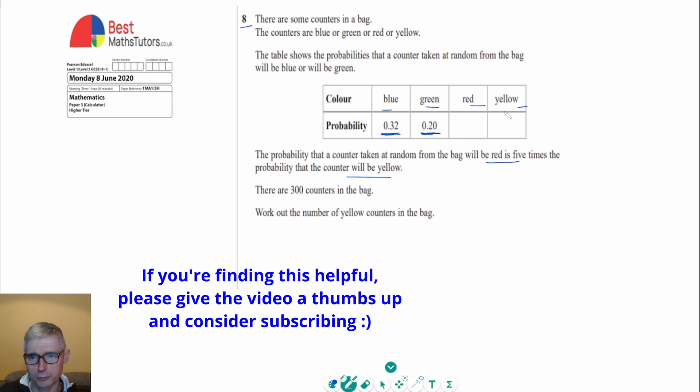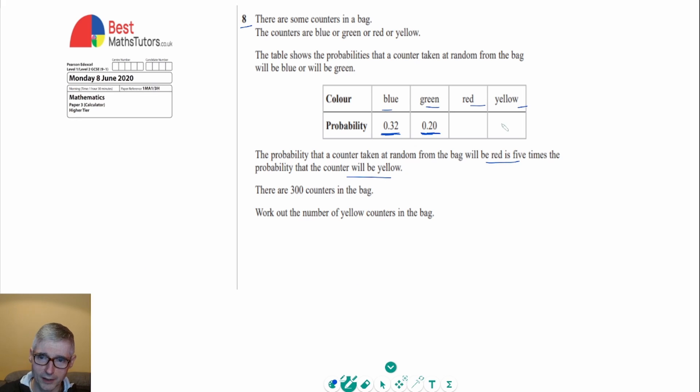So what we could do, let's call the probability of taking a yellow counter x. Then because the probability of taking a red one is five times that, we can actually call that 5x. And we're now told that there are 300 counters in a bag. So work out the number of yellow counters in the bag. We're going to need to try and work out what x is in order to do this.